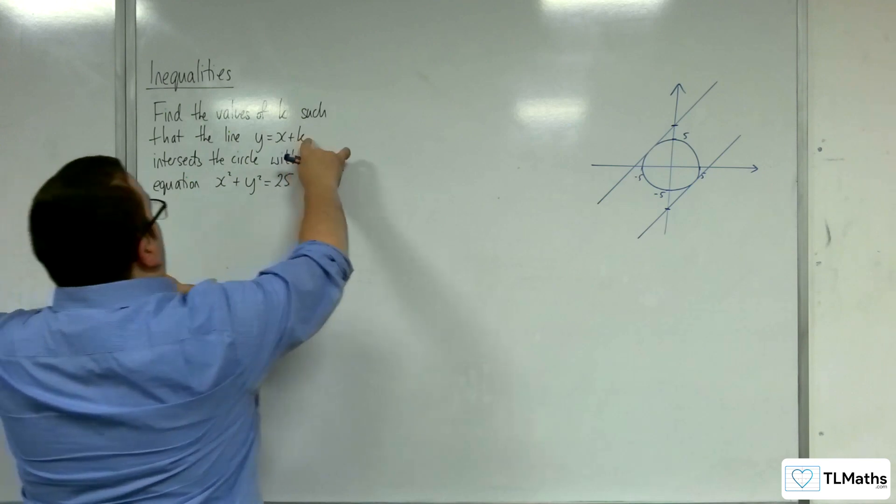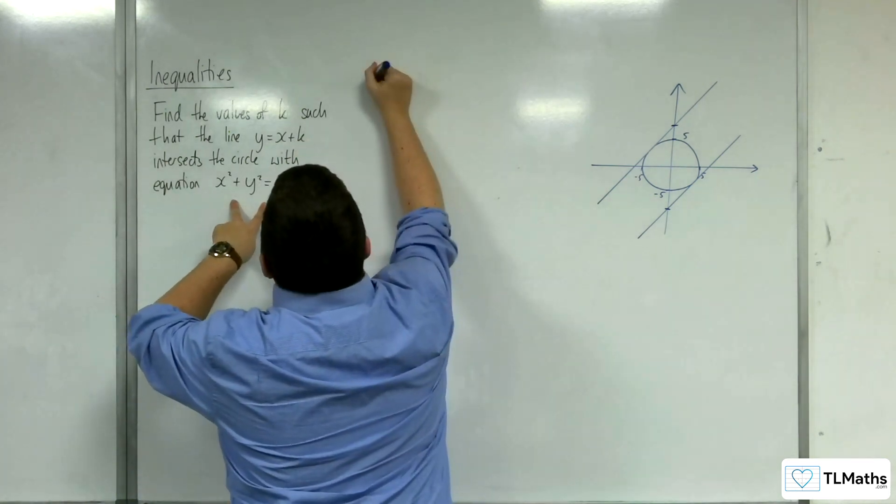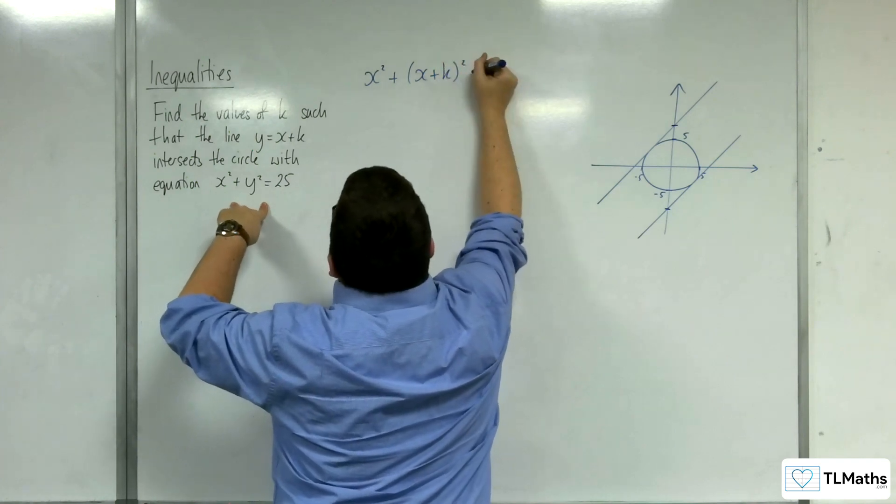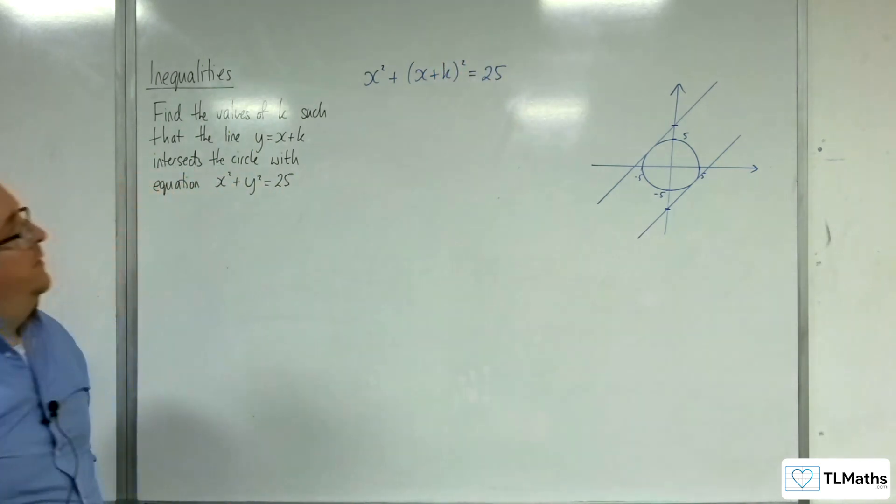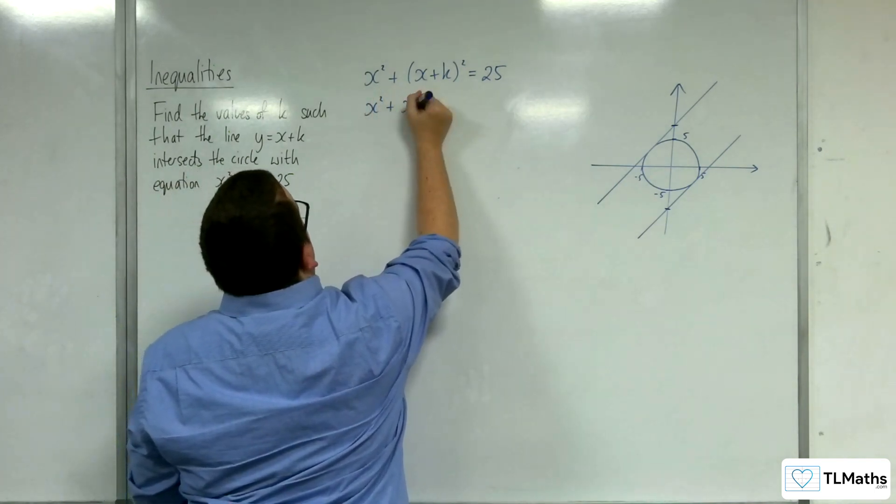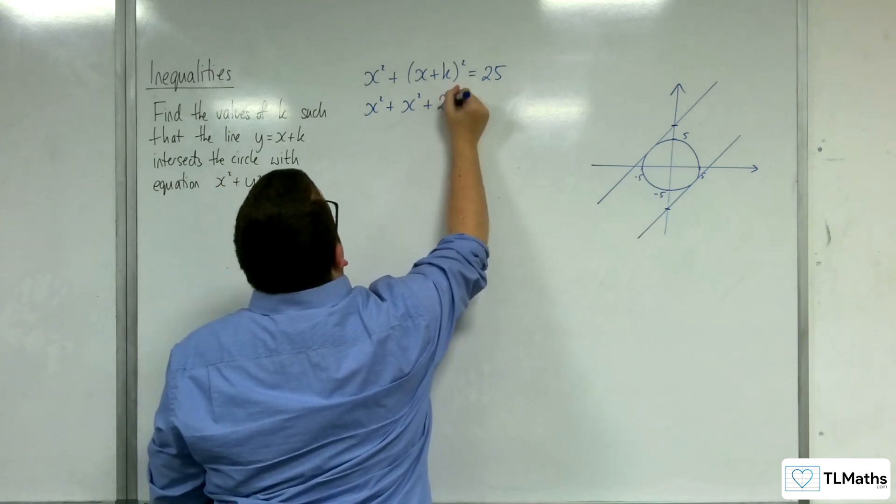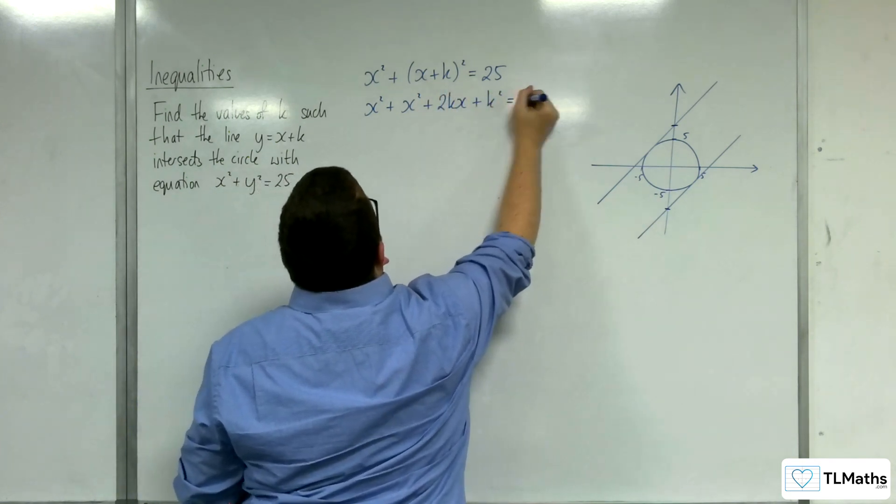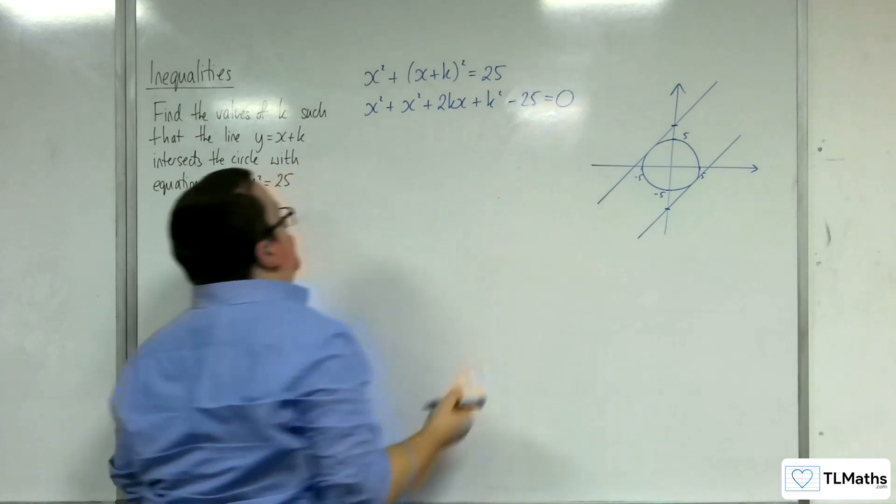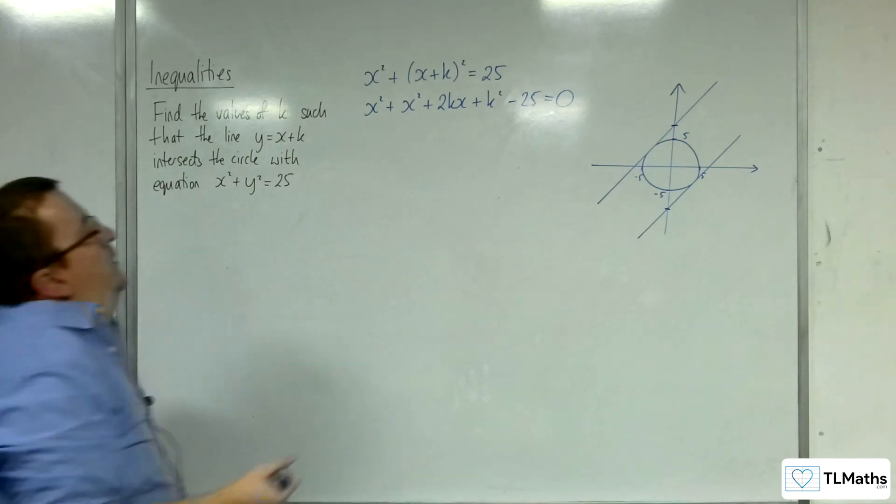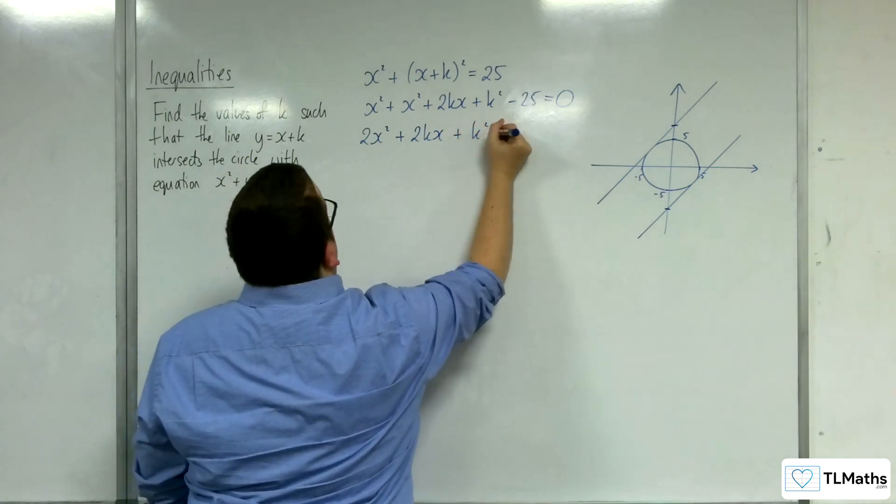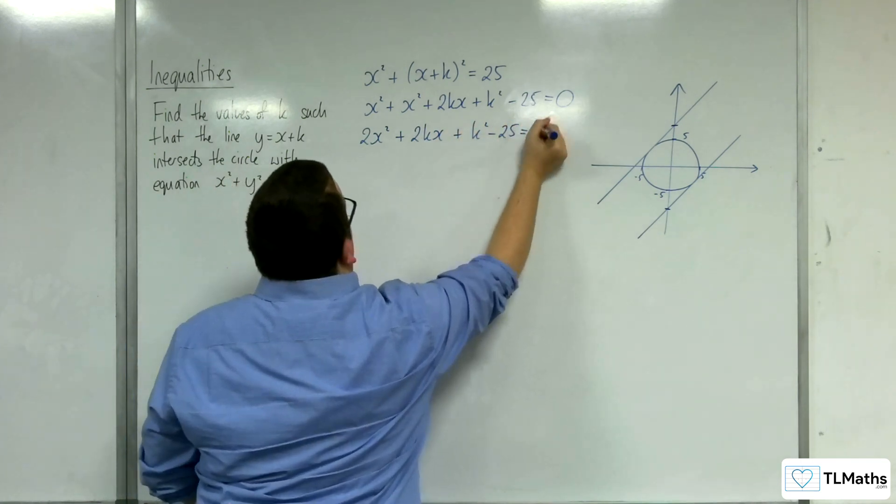I'm going to substitute the line into the circle. So x squared plus y squared, so x plus k all squared, is equal to 25. So I'm going to expand out that left-hand side: x squared plus x squared plus 2kx plus k squared equals 25. I'll subtract 25 from both sides to get everything onto one side of the equation. So I've got 2x squared plus 2kx plus k squared minus 25 equals 0.